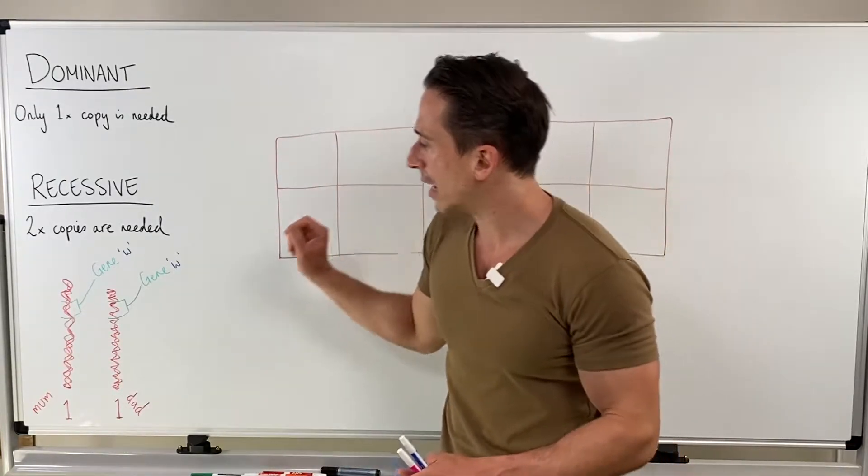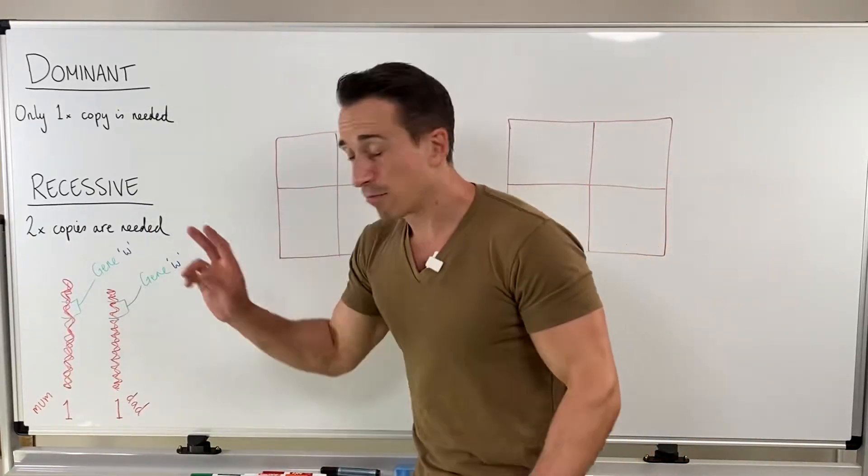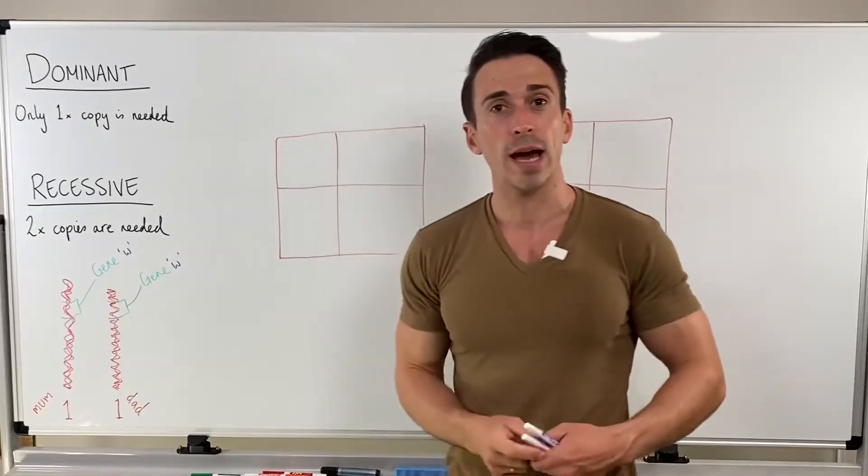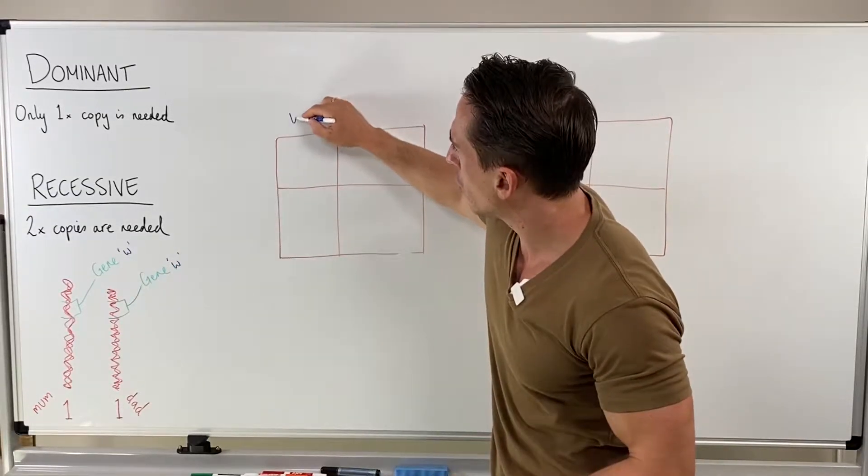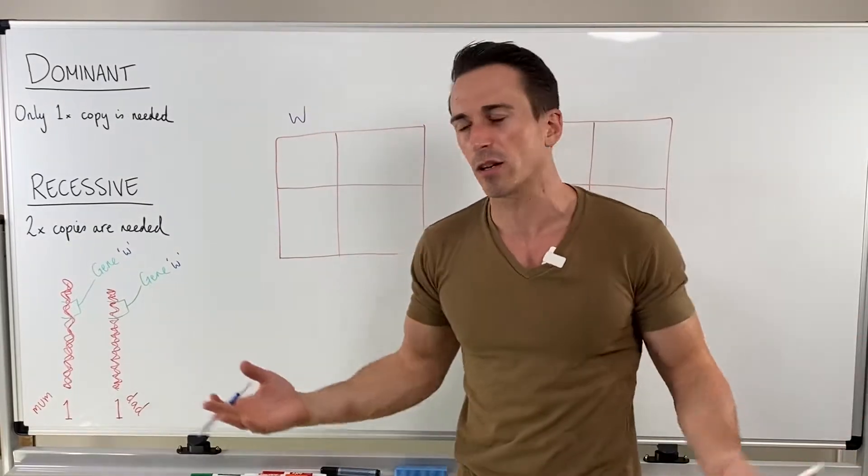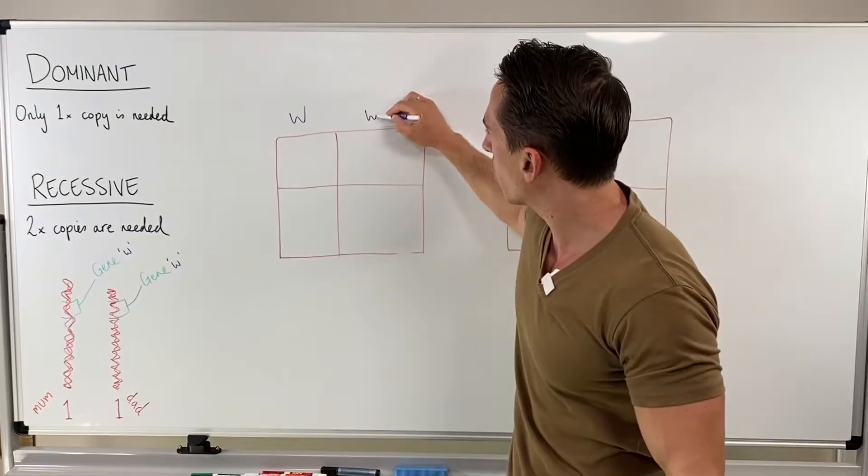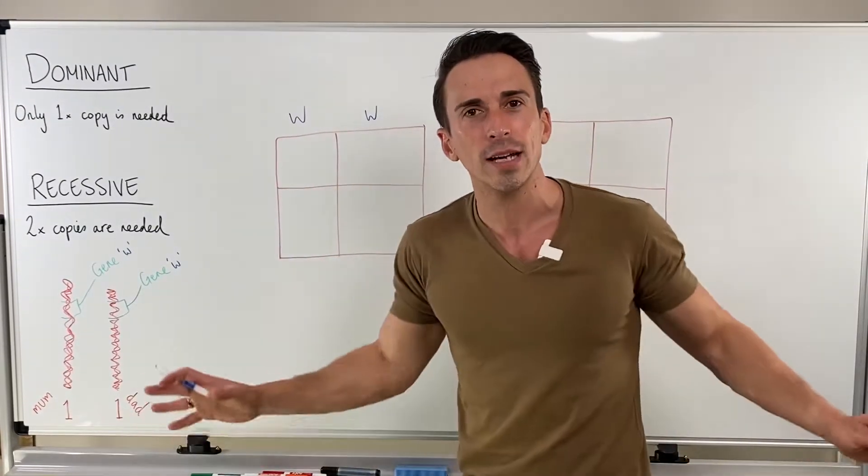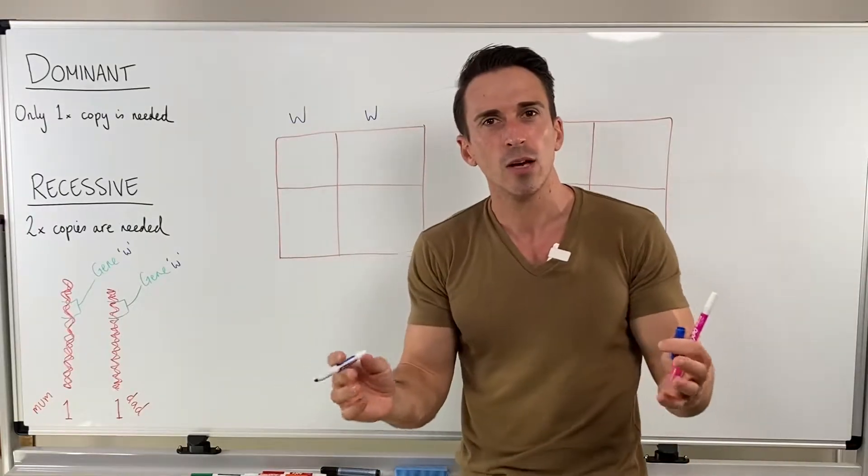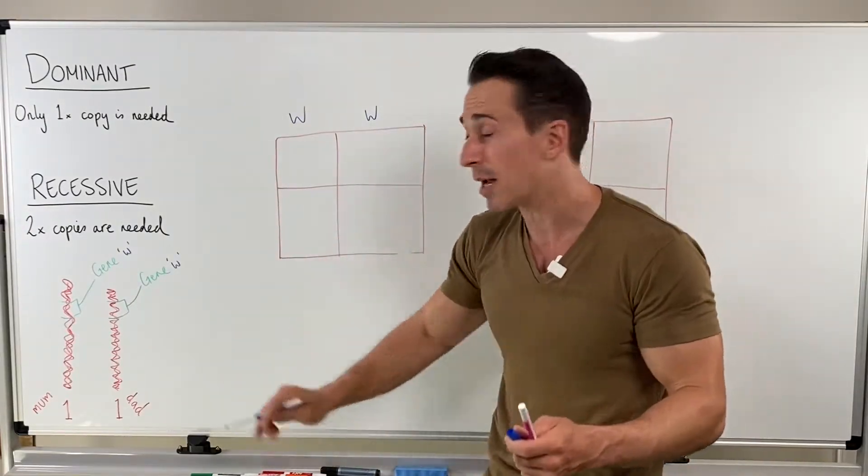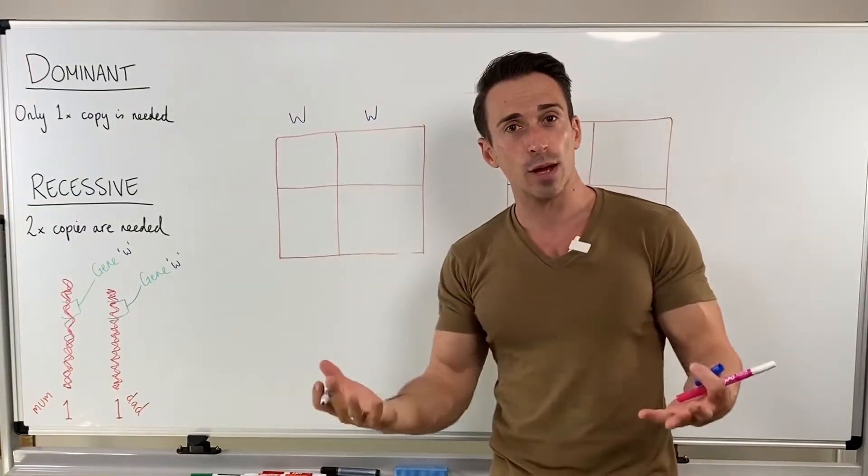So I've taken just a gene at random here that I'm going to call gene W. And because I've got two, one from mum, one from dad. And so if you have a look, what I'm going to have is a small w and it's just a random letter that I chose. A small w that represents that gene from mum and a small w that represents that gene from dad. And they're identical, right? They're identical. That means the nucleotides or the DNA sequence looks exactly the same for mum and for dad. And they're both therefore denoted as little w's.